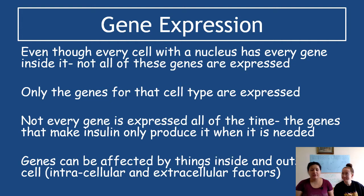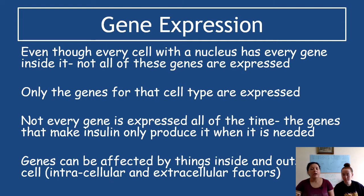Remember from division and differentiation: even though every cell with a nucleus has every gene inside it, not all of these genes are expressed. In skin cells, a hundred percent of the chromosomes are there, but not all genes are active. Only the genes characteristic for that type of cell are going to be expressed, and not every gene that is switched on is expressed all of the time. For example, insulin — if that was constantly switched on and we were constantly producing insulin, we would die. It's only produced when it's needed. This means genes can be affected by things inside and outside of the cell, and you can switch on genes based on body temperature, certain hormones, or certain drugs. These are known as intracellular and extracellular factors.